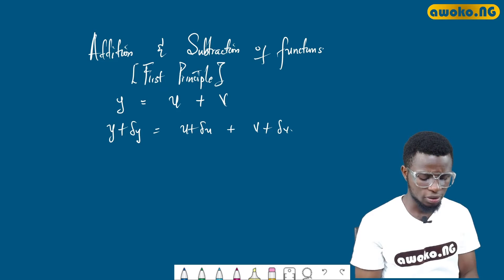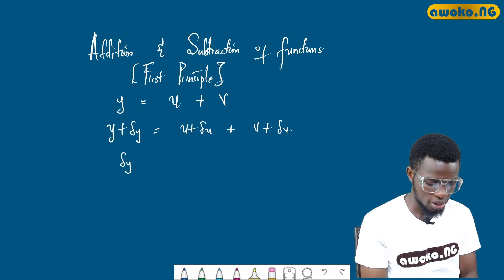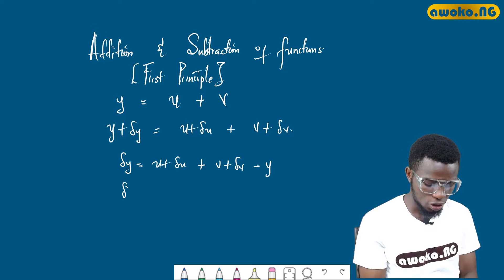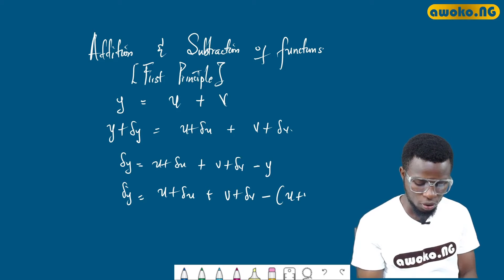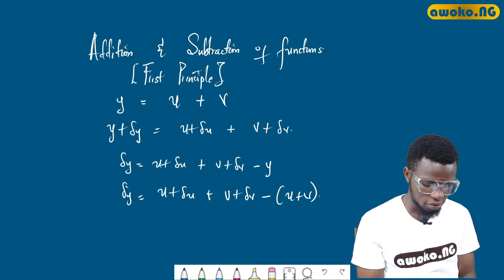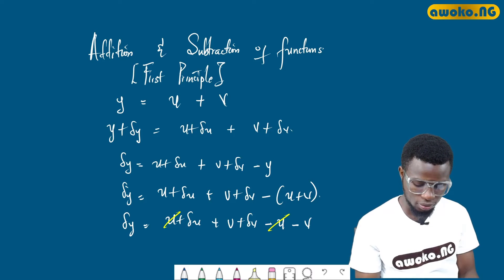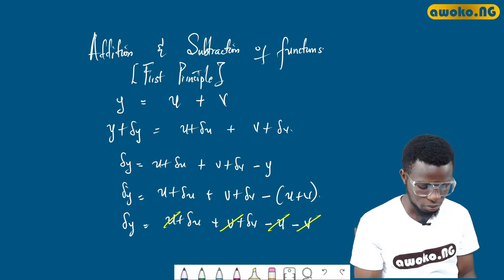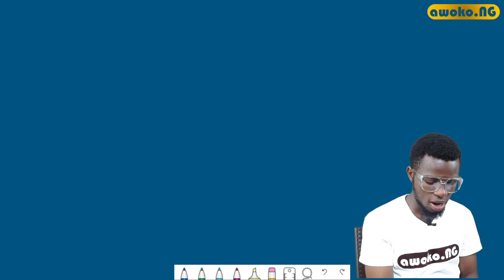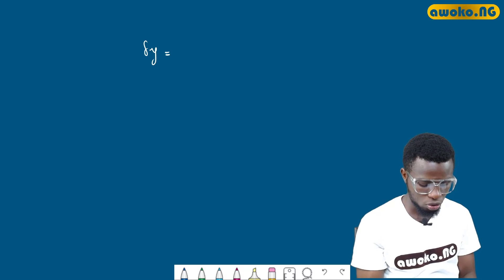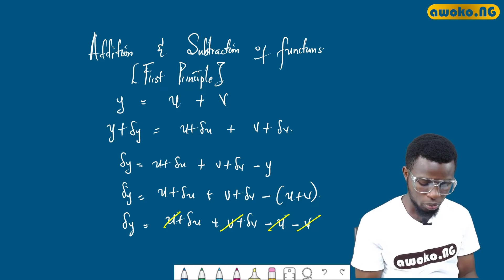Now, we have to bring y to the right-hand side so that Δy stands alone. So, Δy equals u plus Δu plus v plus Δv minus y. Opening the bracket, Δy equals u plus Δu plus v plus Δv minus u minus v. The u and v cancel out, leaving us with Δy equal to Δu plus Δv.